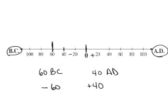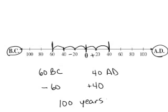So I can either count on the number line. I need 20, 40, 60, 80, 100 spaces. There's 100 years between those two times, or you can think of it as a subtraction problem.